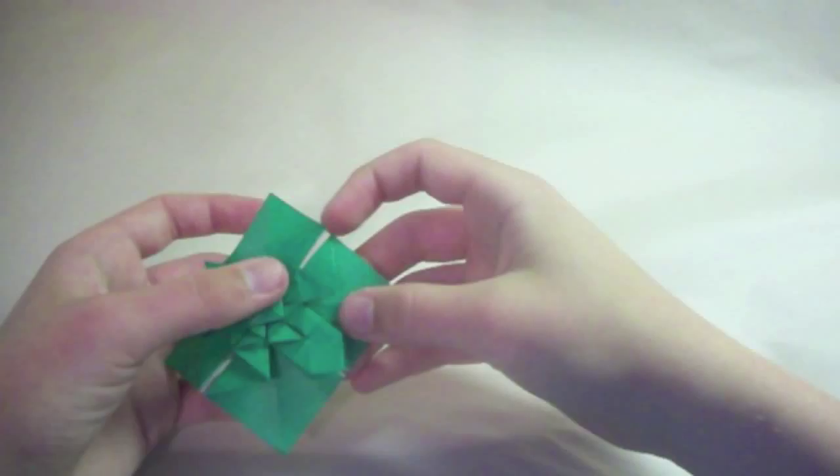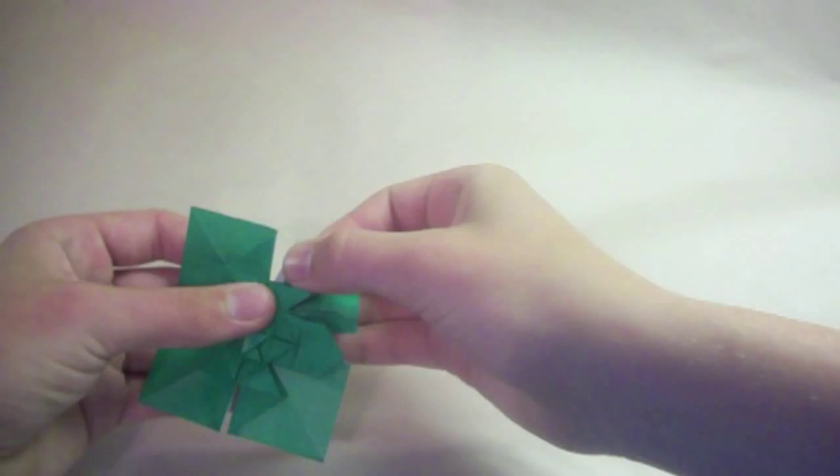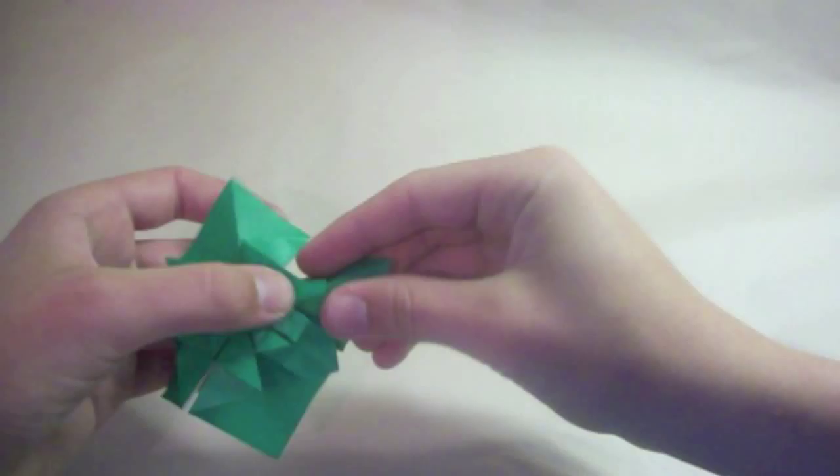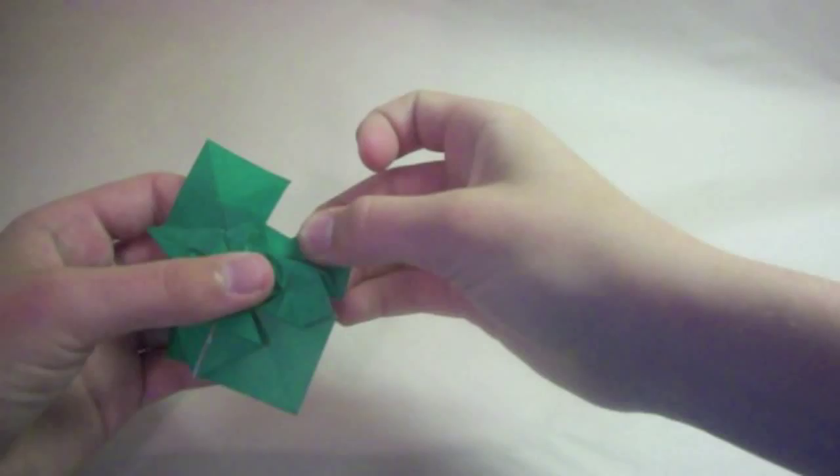So we create a little bit of three dimensionality on the body. And then we'll fold along this line here, like that, and you want to make sure that it comes all the way to the center on the back.